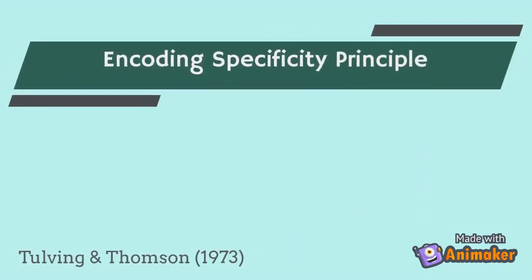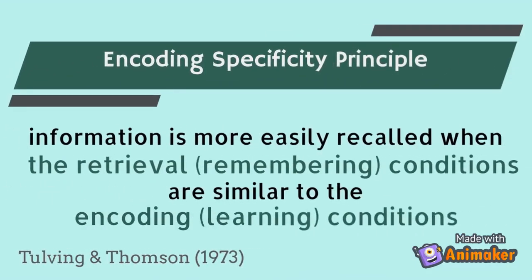What's happening when you remember something as soon as you retrace your steps can be explained by the encoding specificity principle, or the idea that it's easier to remember information when the retrieval or remembering conditions are similar to the original encoding or learning conditions.